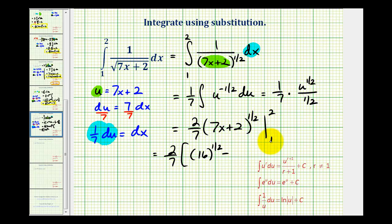Minus, when x is one, we'll have seven times one. That's seven plus two minus nine to the one-half. So we'll have two-sevenths times. This will be four minus three. So this definite integral is equal to two-sevenths. Okay, I hope you found this helpful.